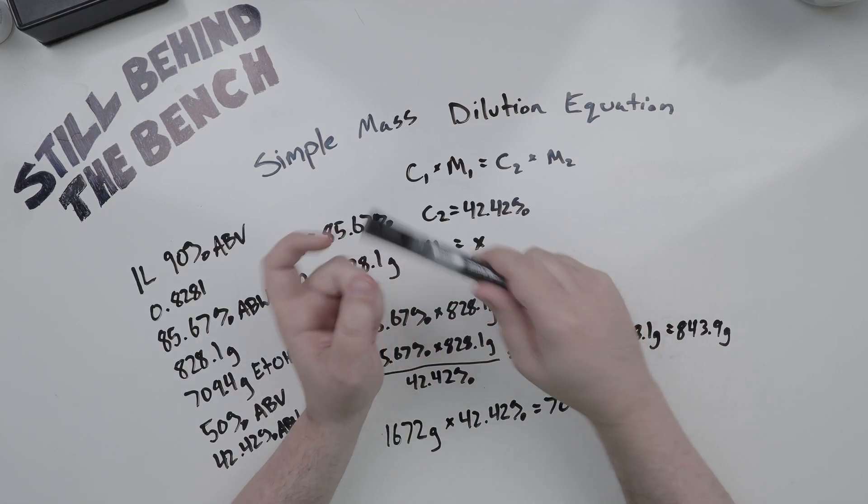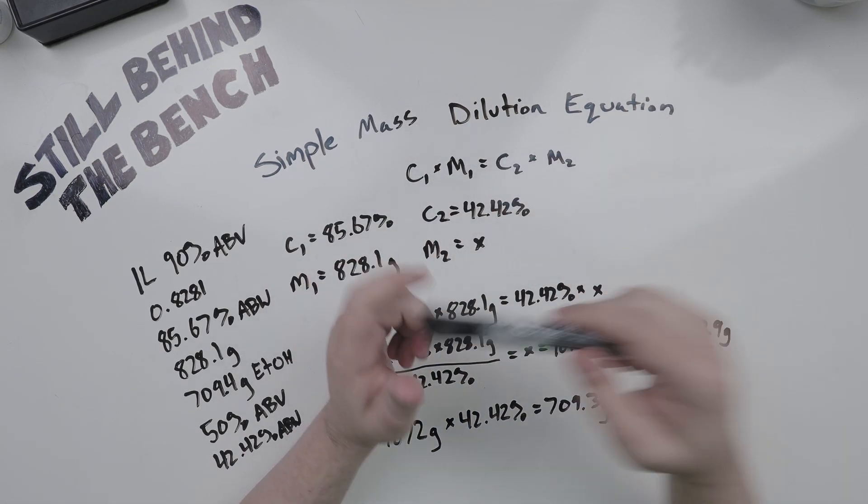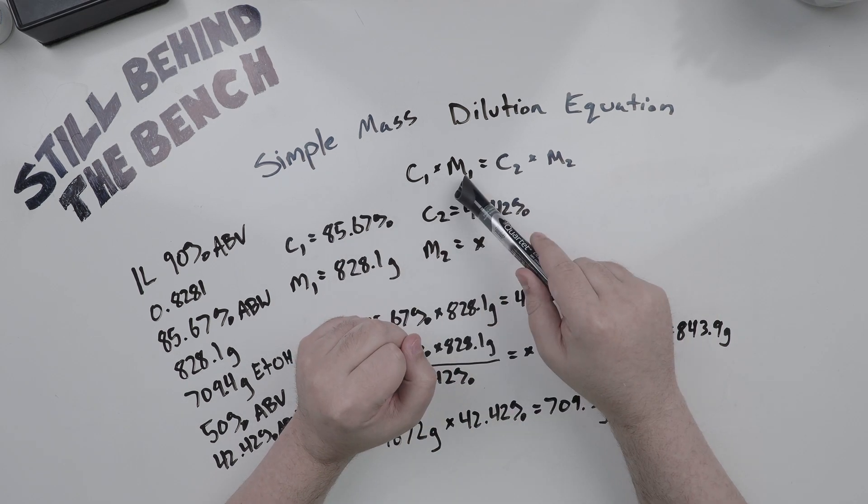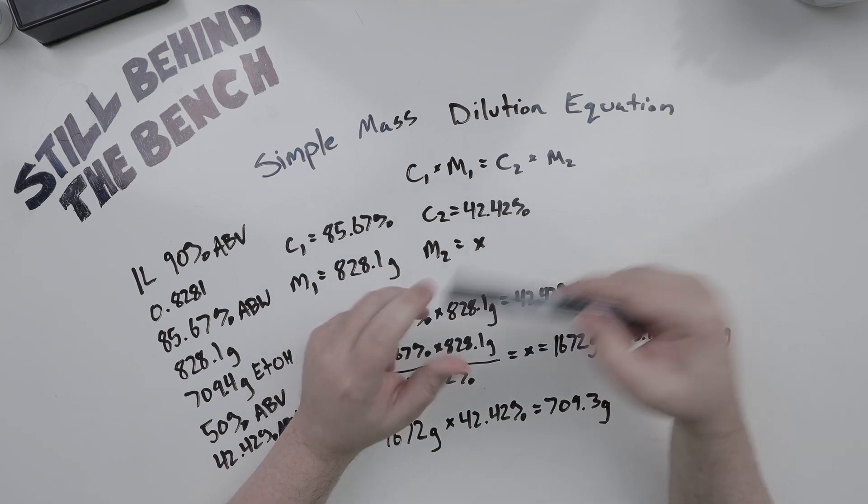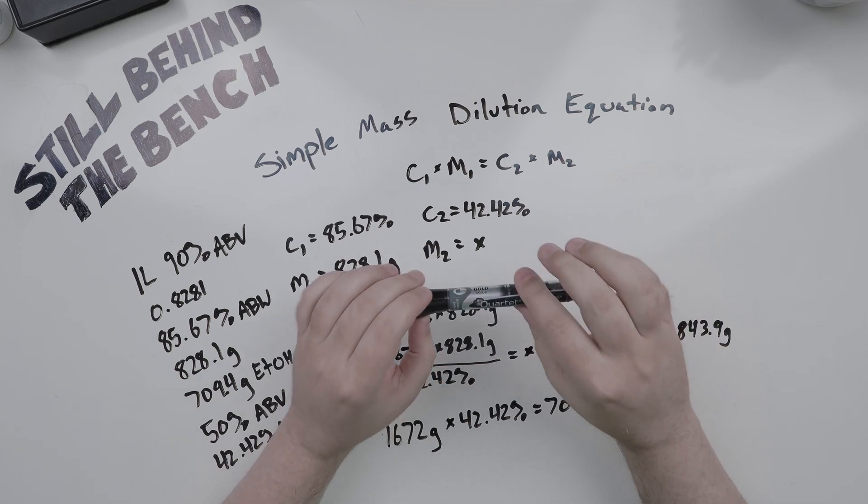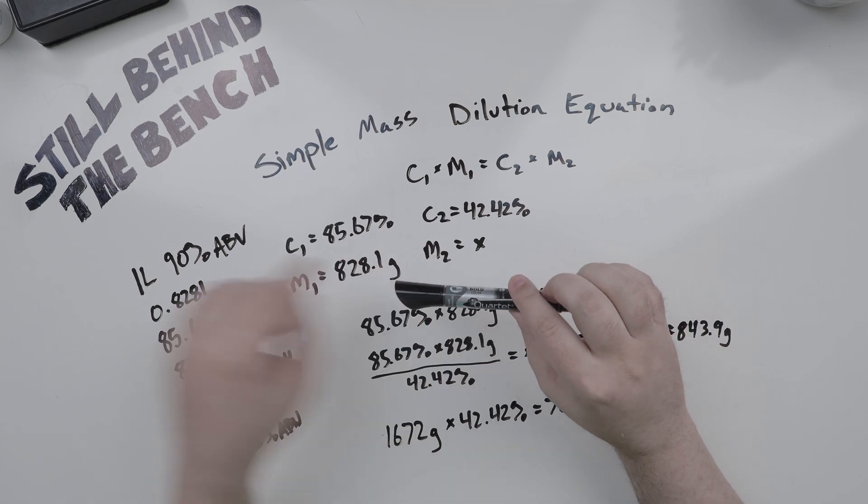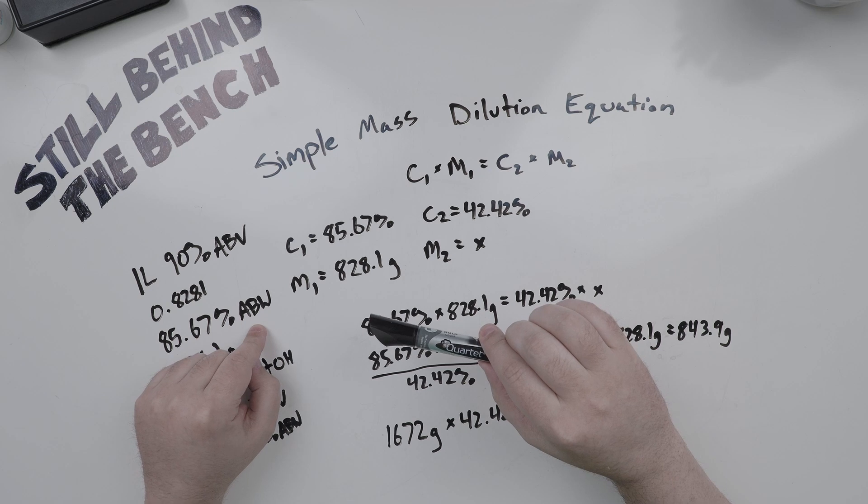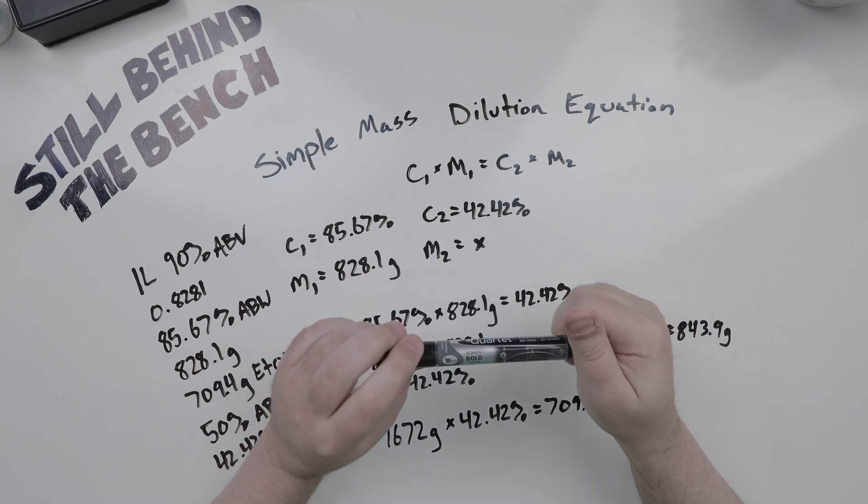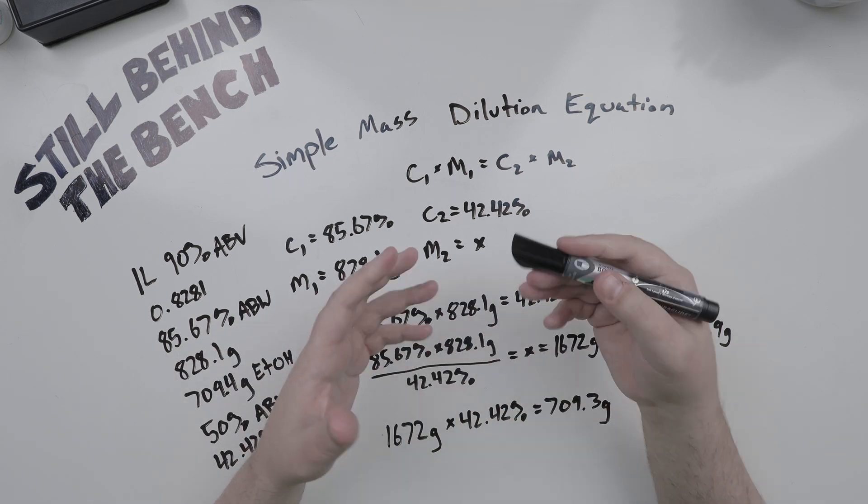So let's take a look at the simple mass dilution equation now. The simple mass dilution equation shall look very familiar: C1 times M1 equals C2 times M2. The issue here is that you need to convert from volume to mass.